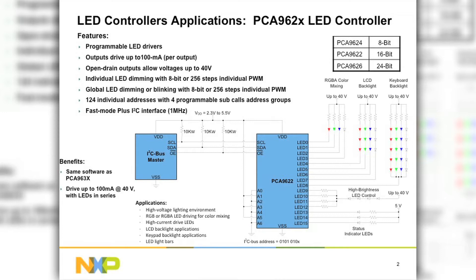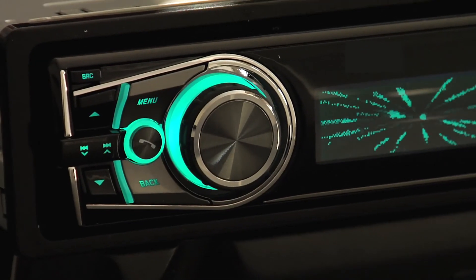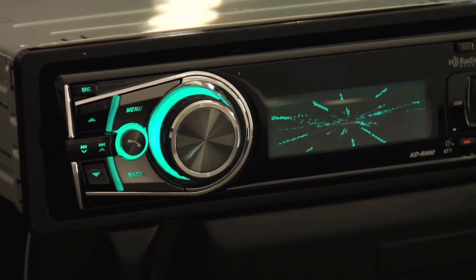The PCA9624 is optimized for red, green, blue, and amber color mixing applications. Each LED output has its own 8-bit resolution fixed frequency individual PWM controller that operates at 97 kHz. A global 8-bit resolution PWM controller has both a fixed frequency of 190 Hz and an adjustable frequency that is used to either dim or blink all LEDs with the same value.